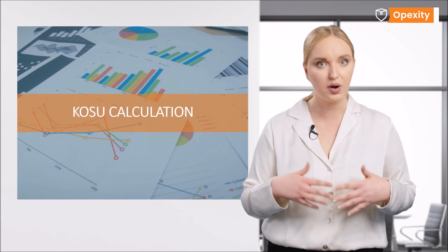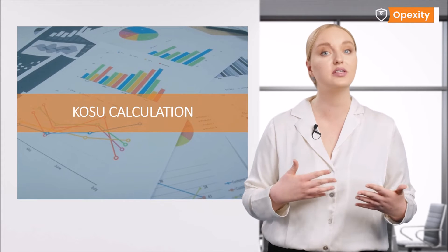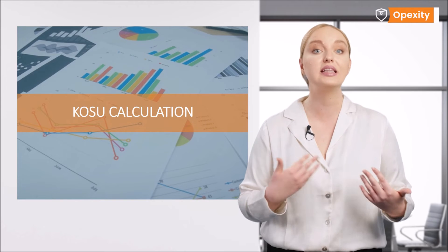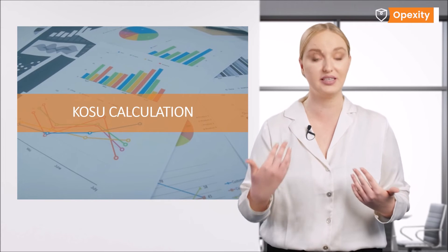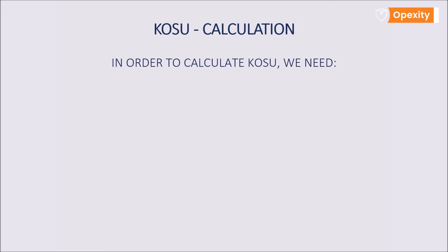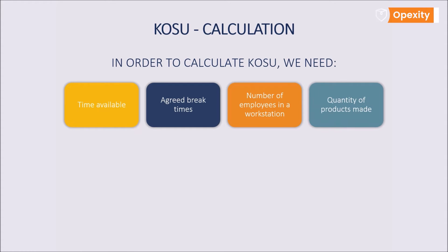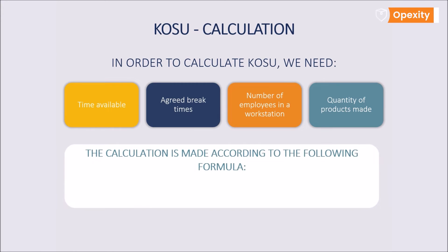We now know what Kosu is, so we can move on to discuss the calculation of the Kosu indicator. What do we need to calculate Kosu? Available time, agreed break times, number of employees in a workstation, and quantity of products made in the time available. The formula for the Kosu calculation is as follows.